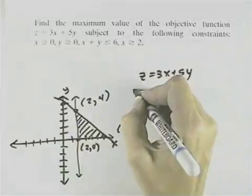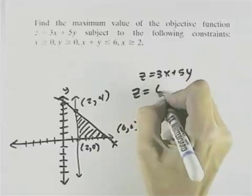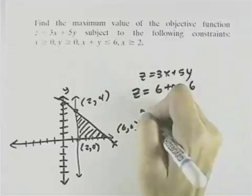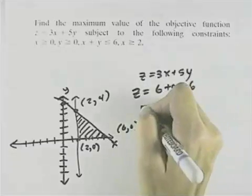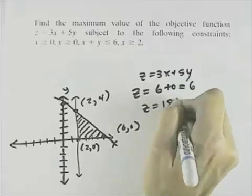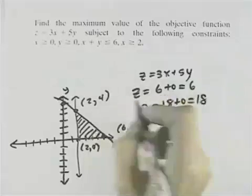When x is 2, we get 3 times 2 is 6 plus 0, or 6. When x is 6 and y is 0, we get z equals 3 times 6 is 18 plus 0, which is 18. And finally,